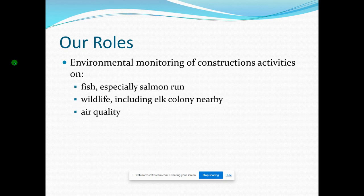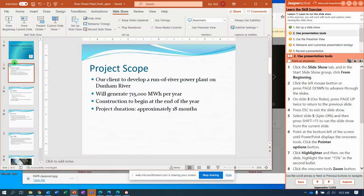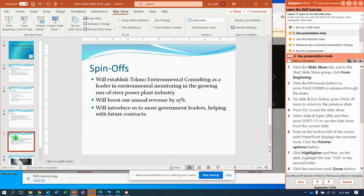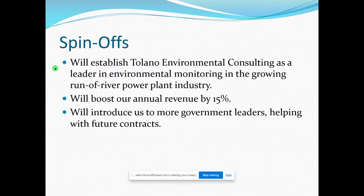Once you get to slide 3, press the Page Up button twice, and then hit the Escape key to get out of the slideshow. Then it says select slide 5. On slide 5, the spin-off slide, we're going to start the show from the current slide, and they say to hold Shift+F5.